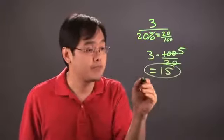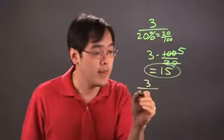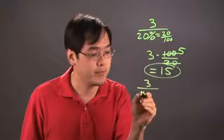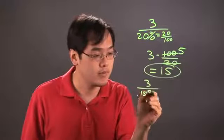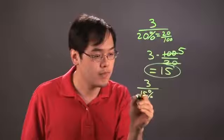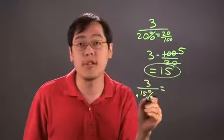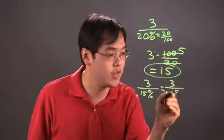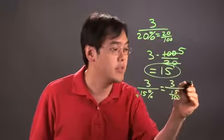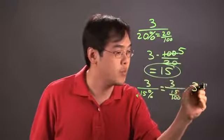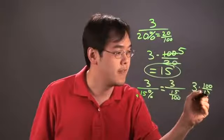If you have 3 divided by 15%, for example, you're really converting 15% as 15 over 100. So 3 divided by 15 over 100, and then you do the same thing. It would be 3 times 100 over 15.